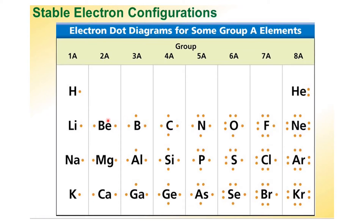However, it is not always the case that elements form bonds purely by gaining or losing electrons. It depends a lot on the electronegativities. If there is a large difference between the electronegativities, then gaining and losing takes place. But if there is not much difference in the electronegativities, then the sharing of electrons takes place. So let's see more of this by talking about ionic compounds and covalent compounds.